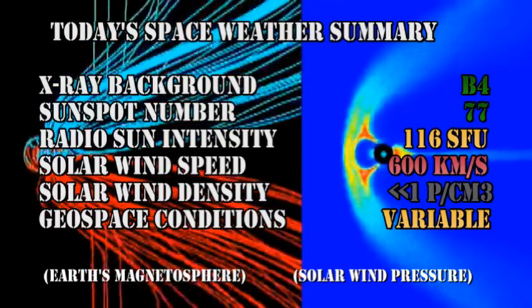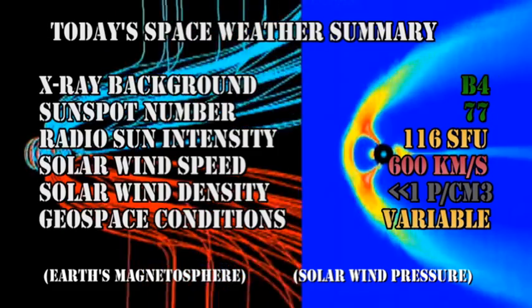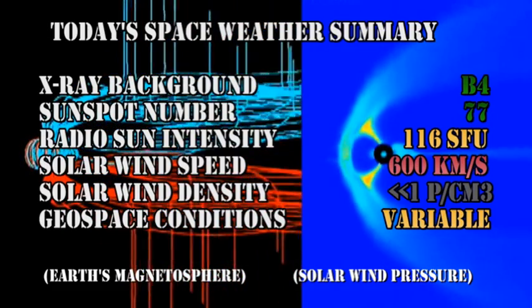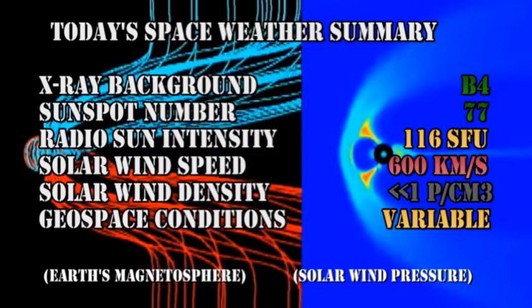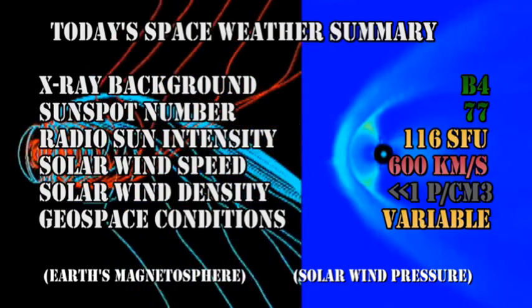So in summary then, the X-ray background has remained at the B4 level. The sunspot number has increased to 77. The radio sun intensity is at 116 solar flux units. The solar wind speed has gone up to over 600 km per second, but with a density of much less than one proton per cubic centimeter. And geospace conditions at the moment are variable.